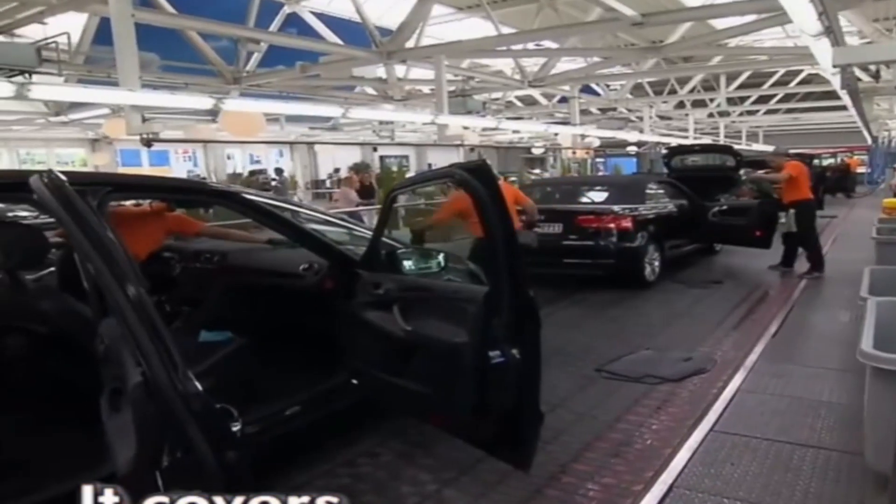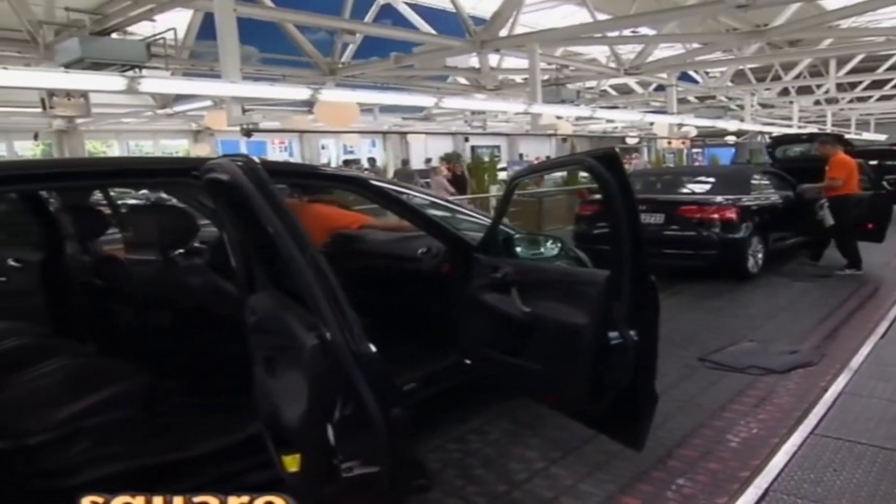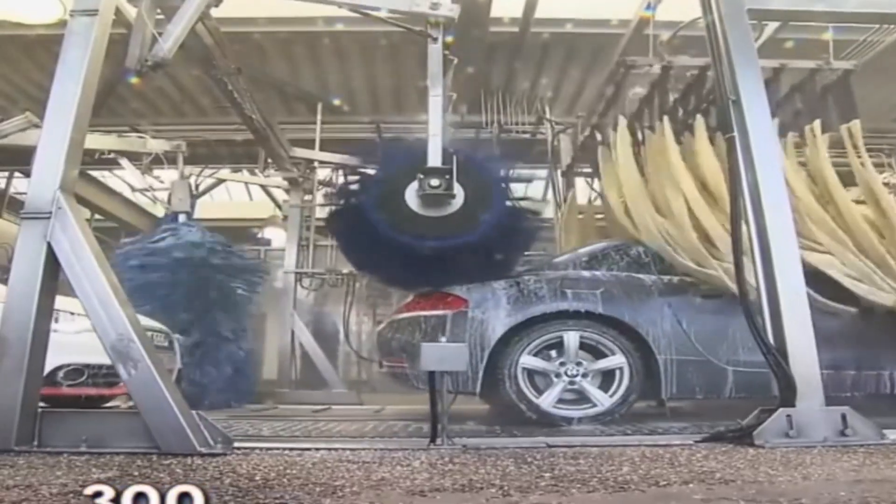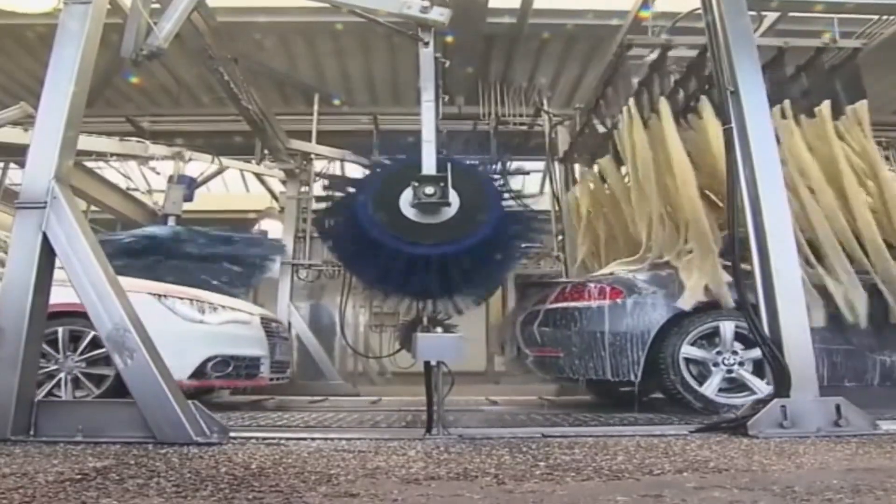Have you ever seen such a large car wash? It covers an area of 15,000 square meters. It can wash 300 cars every hour, and at least 4,000 cars a day.